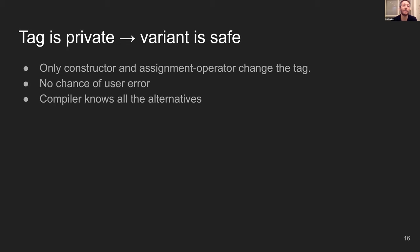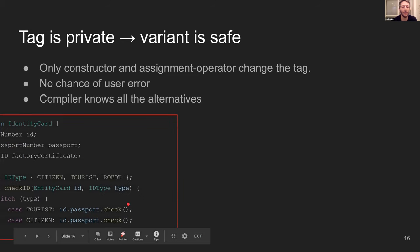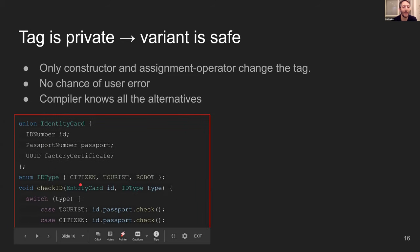Another thing is that unlike typical switch cases or virtual functions, at compile time, if I have a variant of a few specific types, the compiler knows all of them at compile time and can give me safety. Let's look at an example. Here's some C code — I have three ways to identify someone: an ID number, a passport number, or a UUID for a machine.